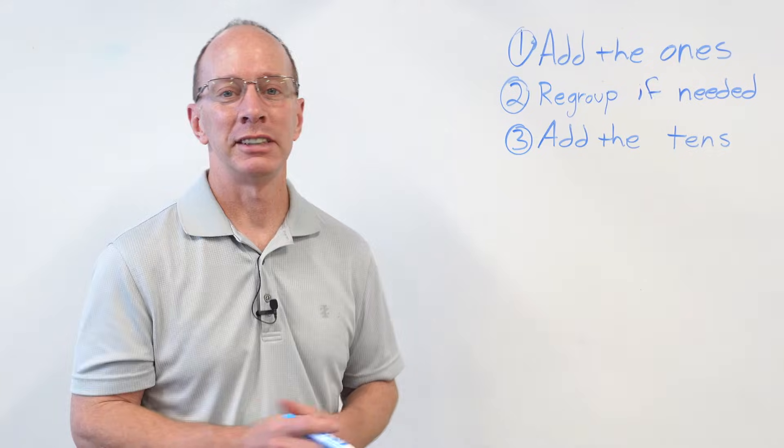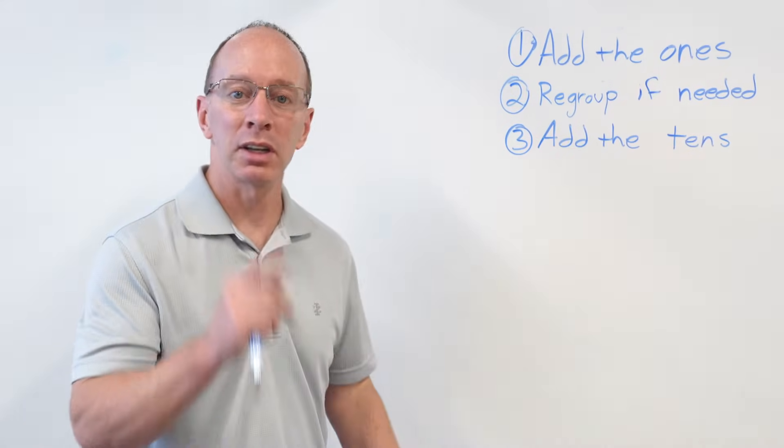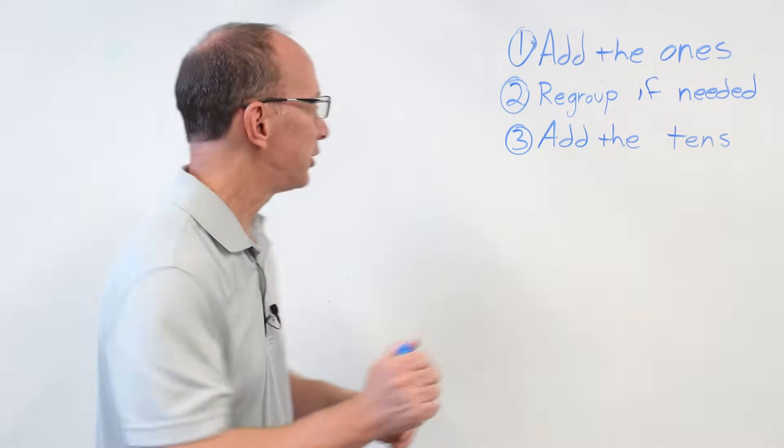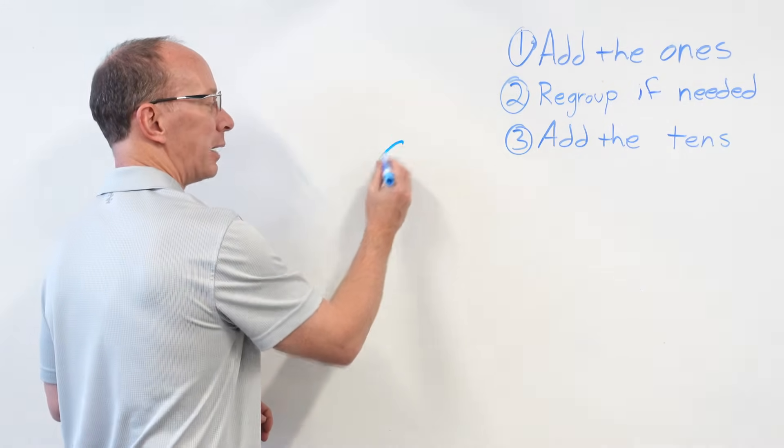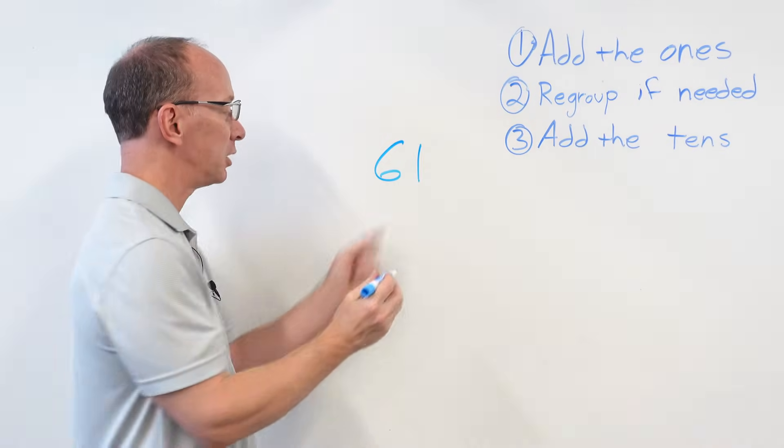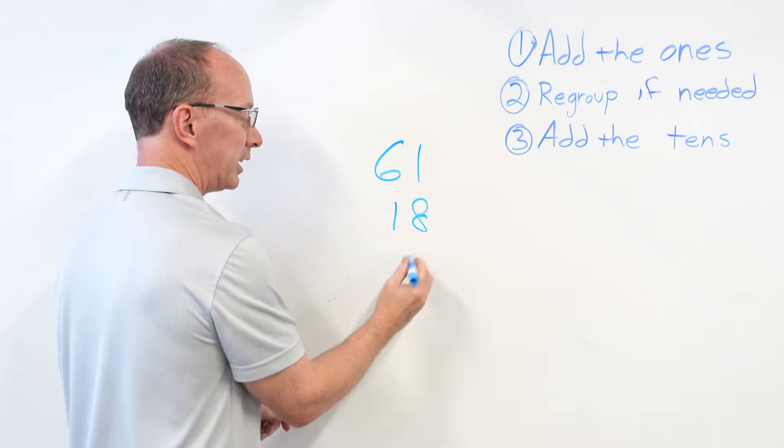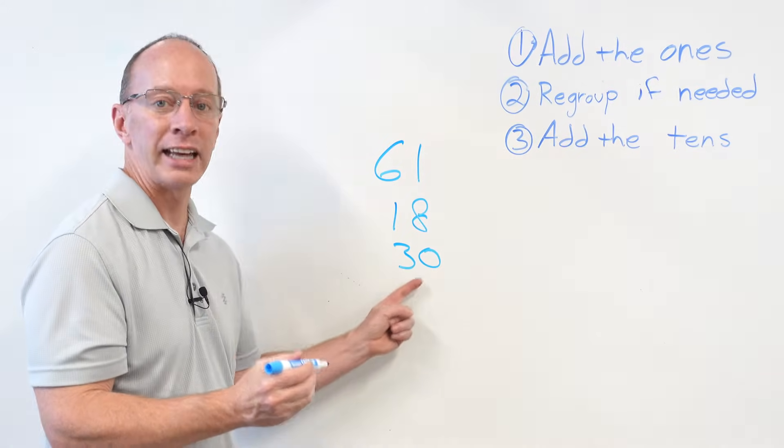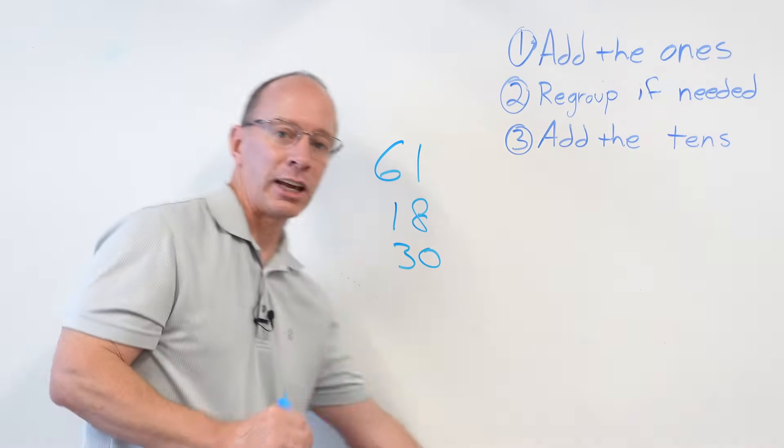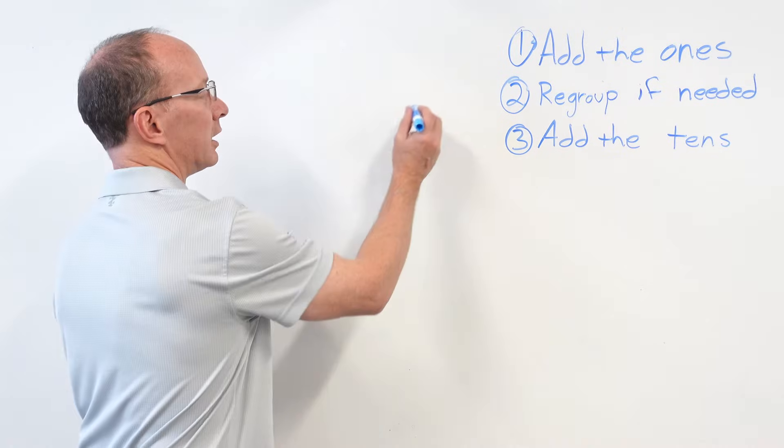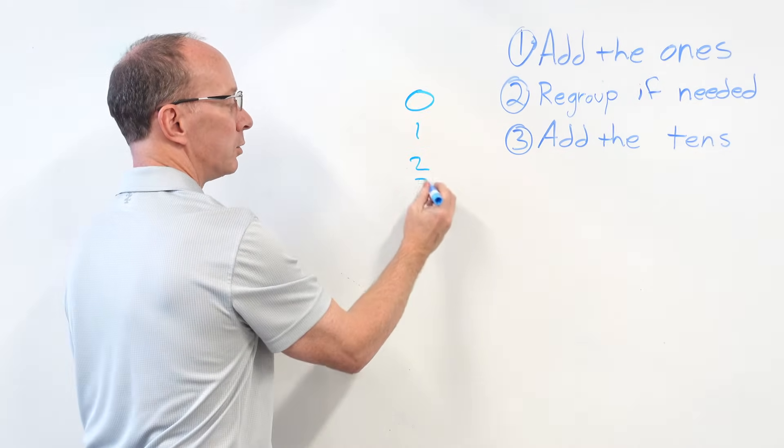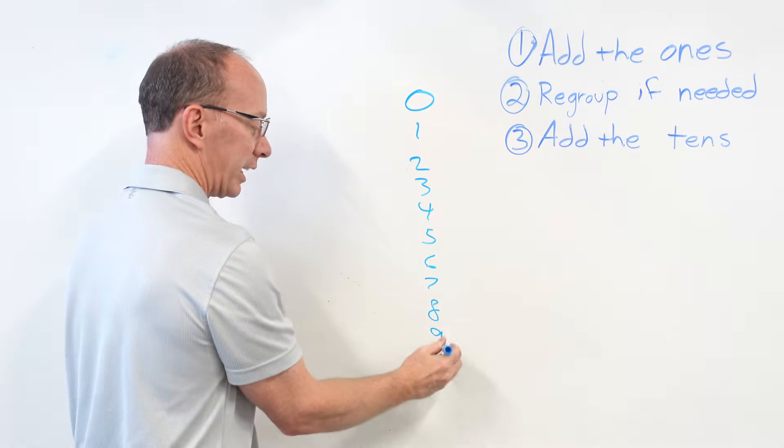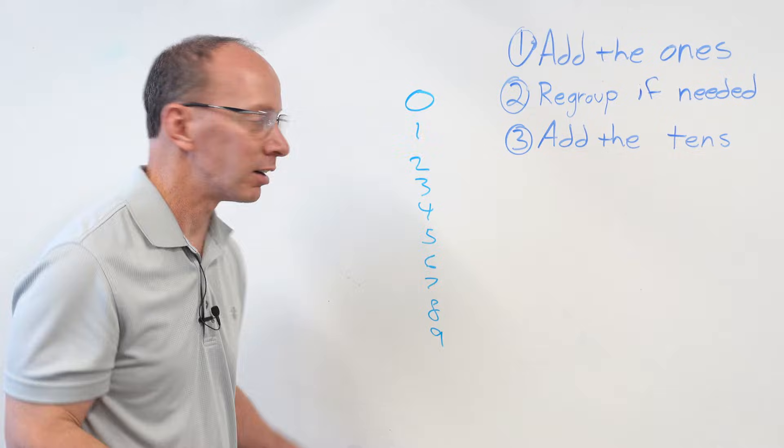Hey, welcome back to the show. Today on the show, we are going to be adding two-digit numbers plus a one-digit number. Do you remember what a two-digit number is? A two-digit number looks like this. It is basically two numbers. It could be 61, it could be 18, or it could even be 30. These are two numbers, a two-digit number. And a one-digit number is anything like 0, 1, 2, 3, 4, 5, 6, 7, 8, or 9. Those are one-digit numbers.